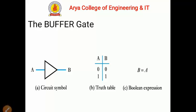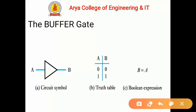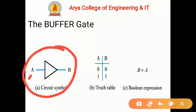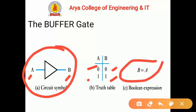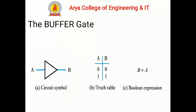Next is the buffer gate. A buffer gate means the output is the same as the input. The symbol diagram is shown in the figure — we have input A and output B. If the value of A is 0 then the output will be 0; if the value of A is 1 then the output will be 1. The Boolean expression is simply B equals A, where A is the input variable and B is the output variable.